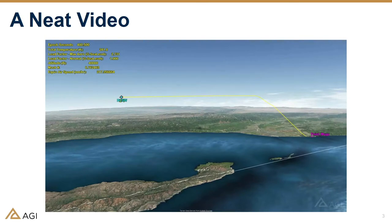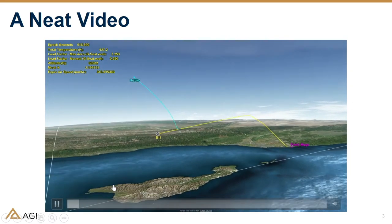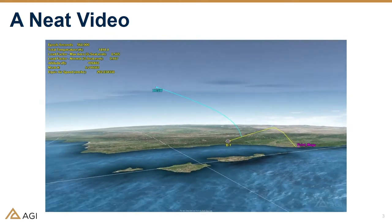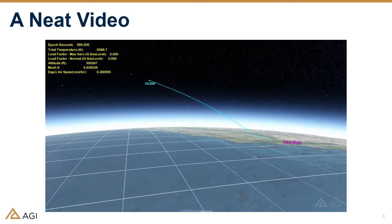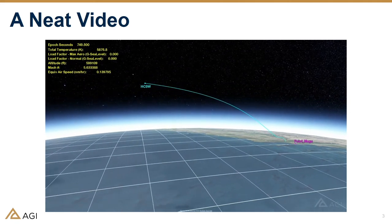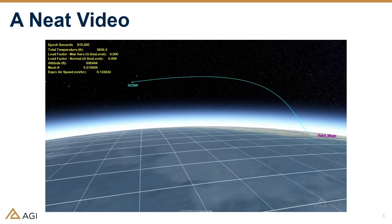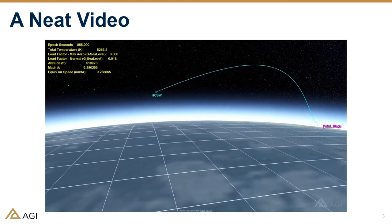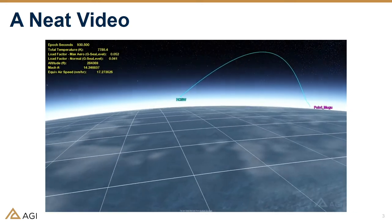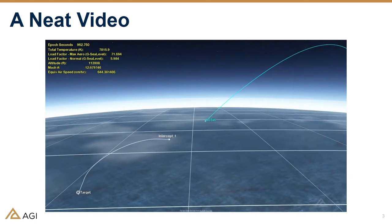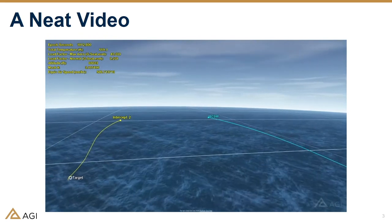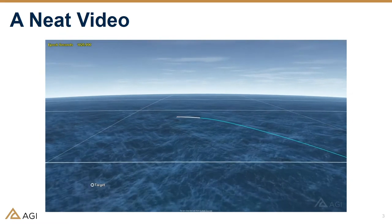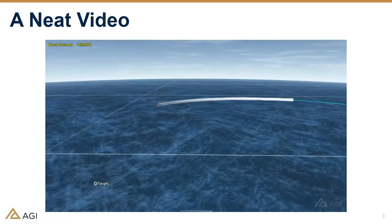We have this neat little video of a hypersonic vehicle. I'd like to bring your attention to the top left corner of the screen — you see a total temperature value. It uses the combination of the Mach number and the atmospherics to tell you what the temperature would be at the pointy end of that vehicle if the air is slowed all the way down. That represents a maximum potential temperature the vehicle would encounter. We're also showing not only the offensive flight path, but also a couple of defensive maneuvers you can model inside SDK.